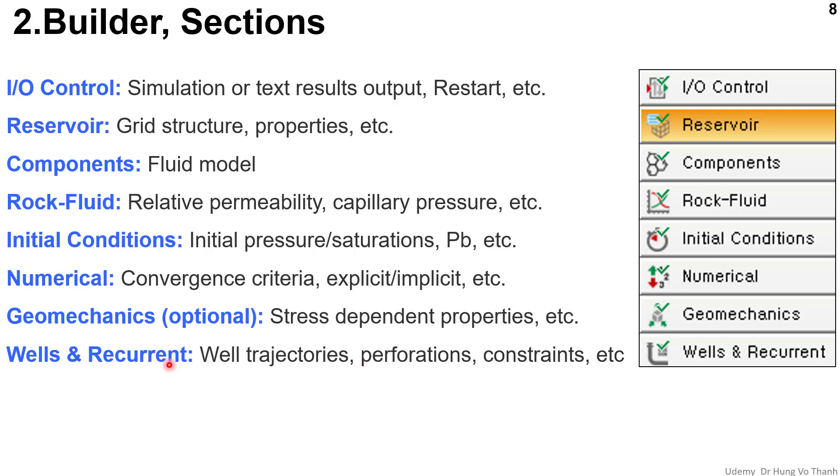The final section is the Wells and Recurrent. For Wells and Recurrent, you need to consider about the well perforation, the other information of the well producer and well injector, such as the injection rate, producer rate, and the other information you need to make the constraints as you would like to define.